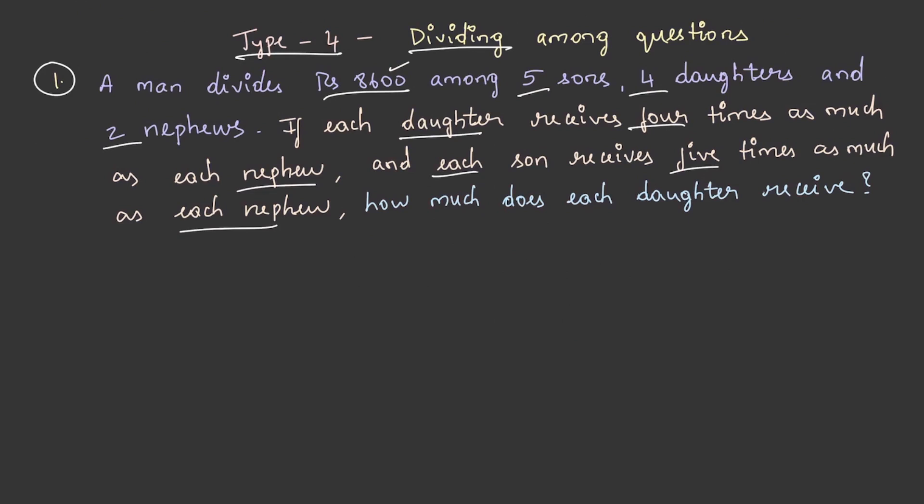Let's solve this. As both daughter and son are receiving more than the nephew, let's take nephew's value as x. Now if nephew is x, then each daughter will receive 4 times of nephew, that is 4x. Similarly, each son will receive 5 times of nephew, so that is 5x.